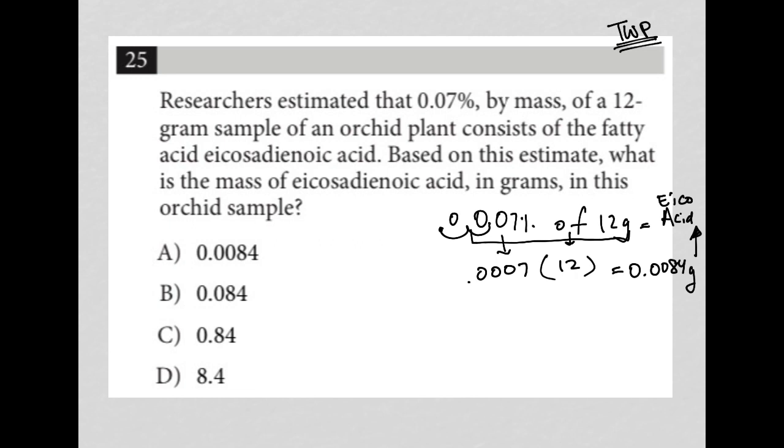The next sentence says: based on this estimate, what is the mass of the eicosadienoic acid in grams in this orchid sample? Well, we already did that. How did I know to do that up front?